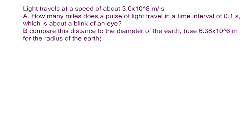Alright, so our question asks us: light travels at the speed of about 3.0 times 10 to the 8th meters per second. How many miles does a pulse of light travel in a time interval of 0.1 seconds, which is about the blink of an eye? So what we have here is two problems - we're trying to find distance from velocity, and then we have to convert the distance from meters into miles, so we have to use dimensional analysis after we figure out our answer.